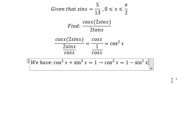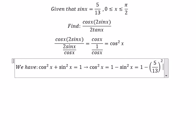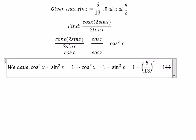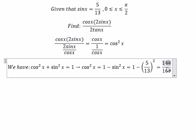Since sin x equals 5 over 13, we calculate 1 minus (5/13) squared, which equals 144 over 169. This is the final answer.